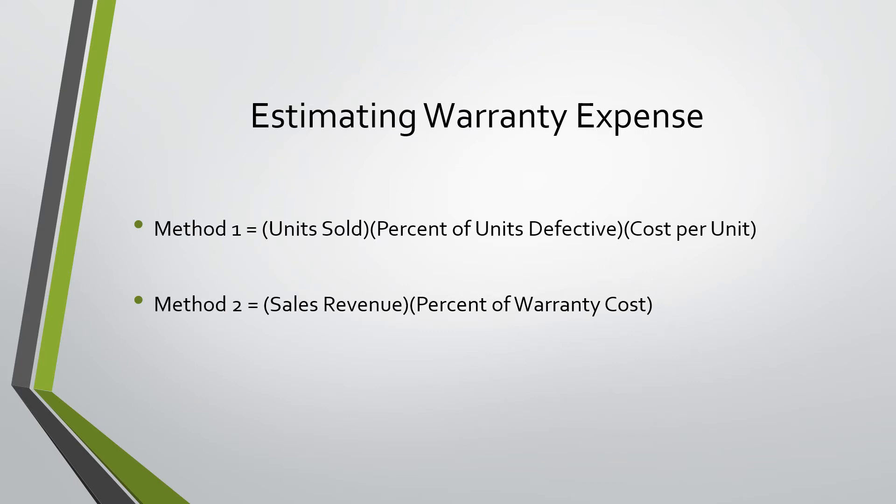There are two different methods to estimate warranty expense. The first is multiplying units sold times the percent of units defective times the cost per unit, which gives the total number of defective units times the cost per each. The second method is simply a percent of sales.